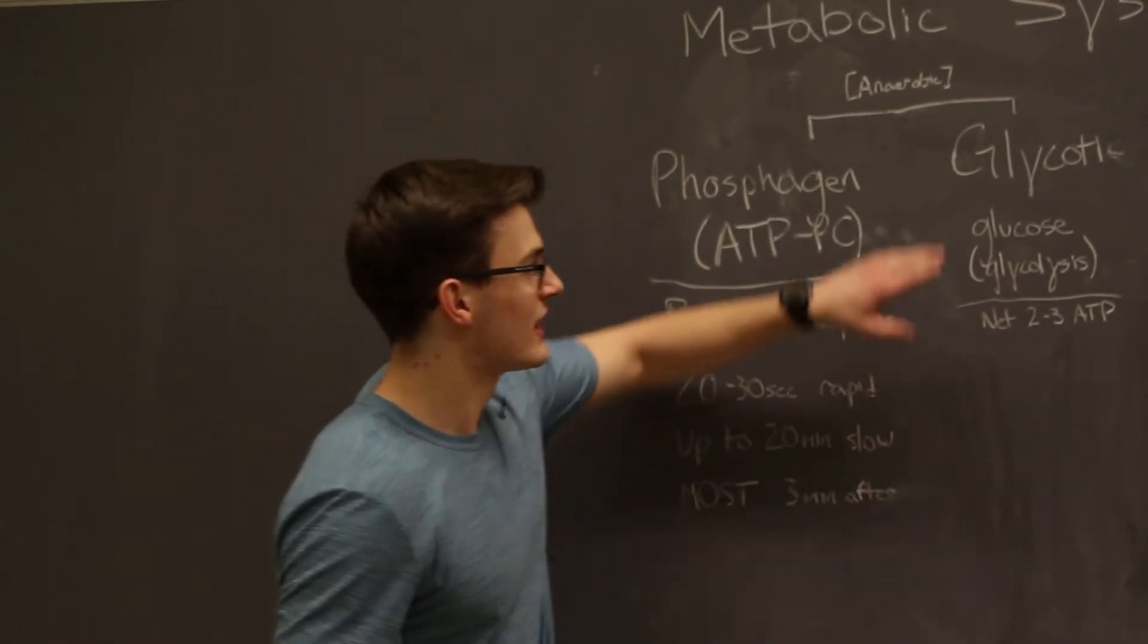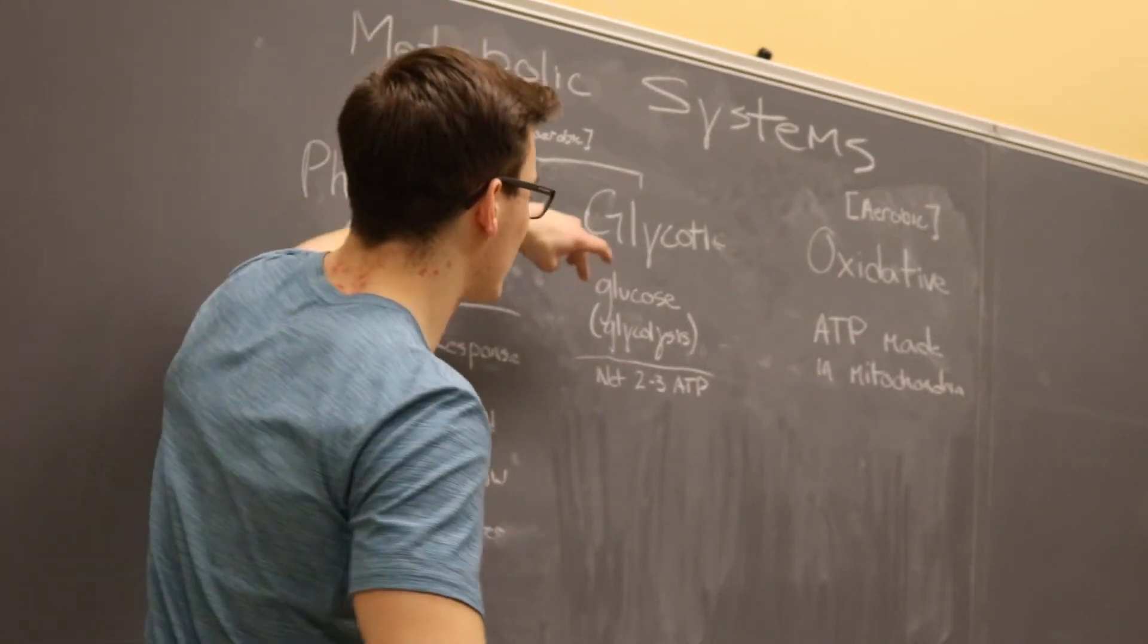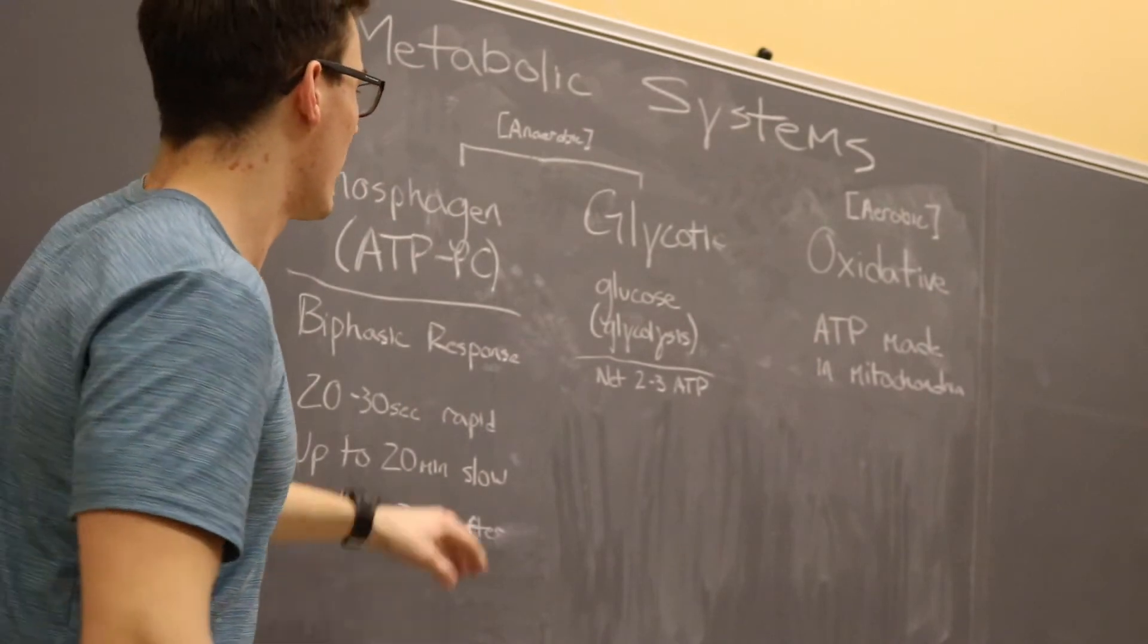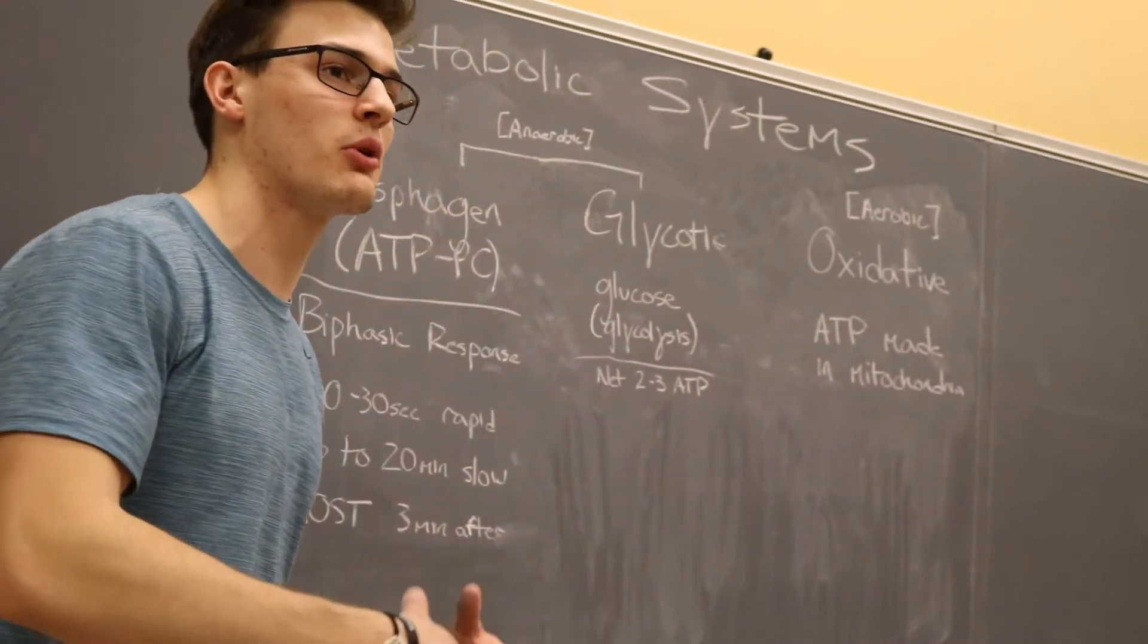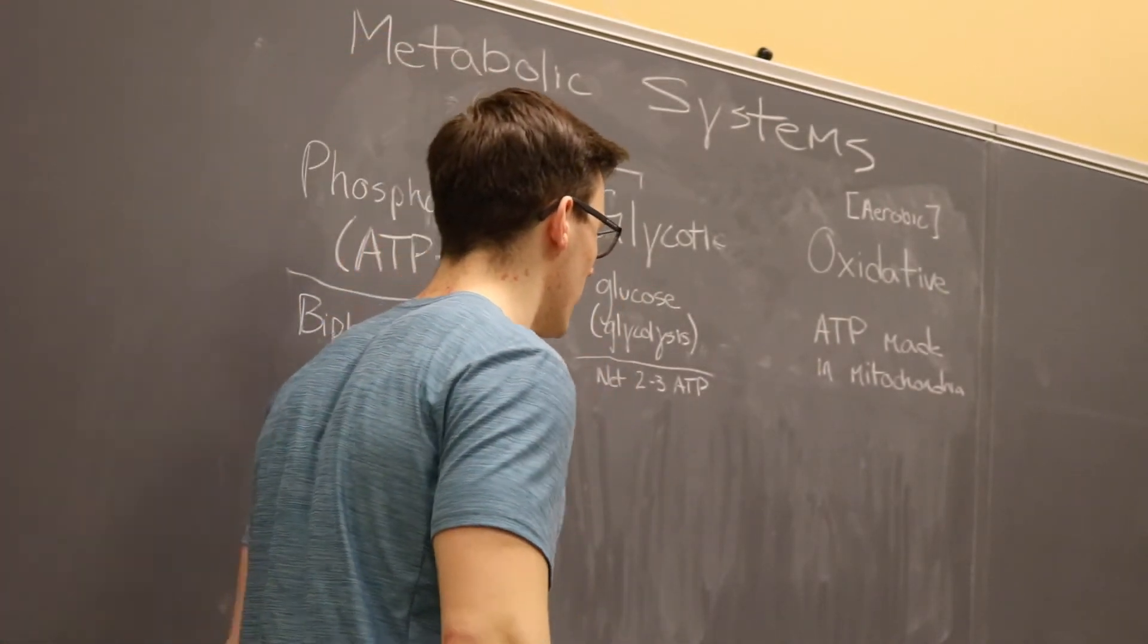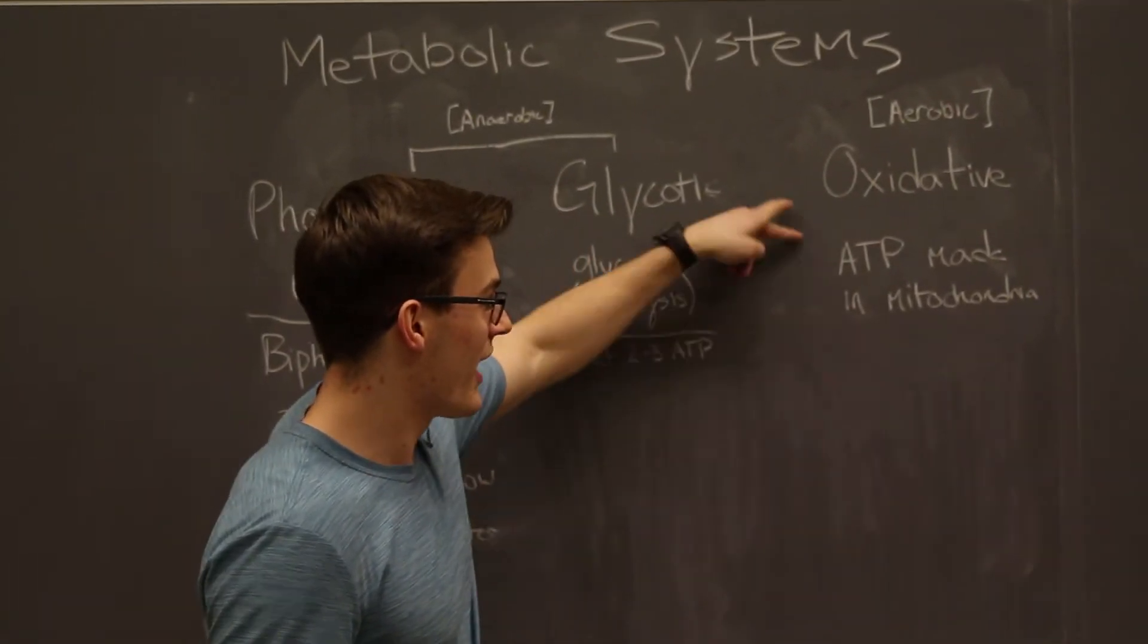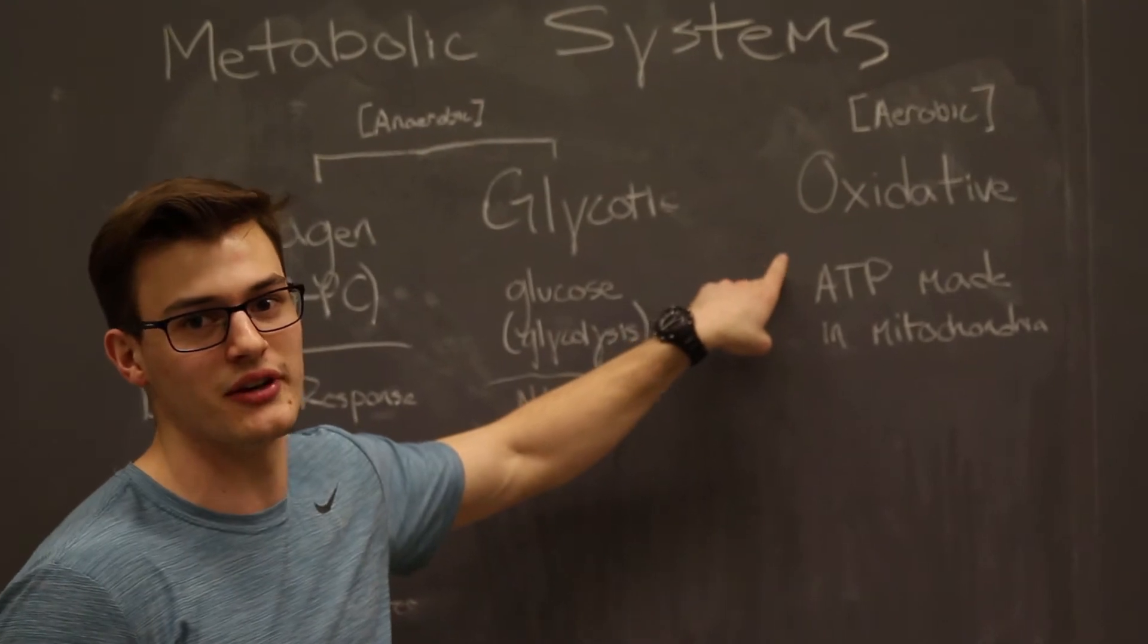Glycolytic uses something called glycolysis, a fancy word for the breakdown of glucose. Again, these two are anaerobic, they do not require oxygen. Oxidative pathways? You want to still be this skinny boy? ATP is made in your mitochondria.